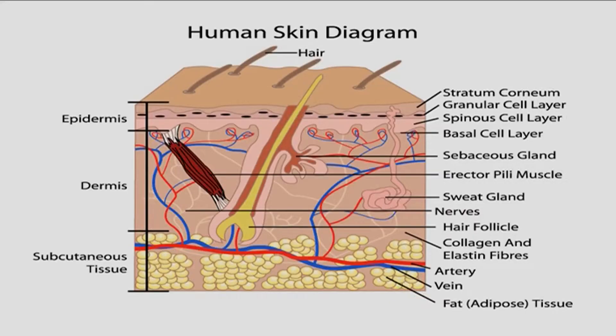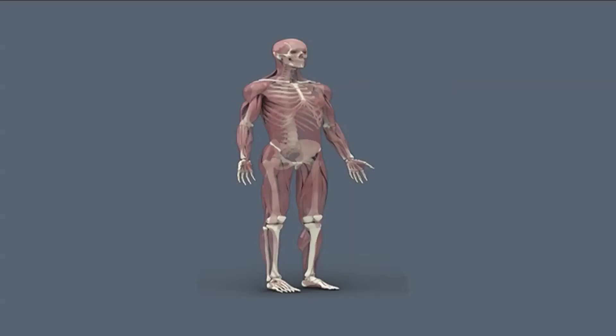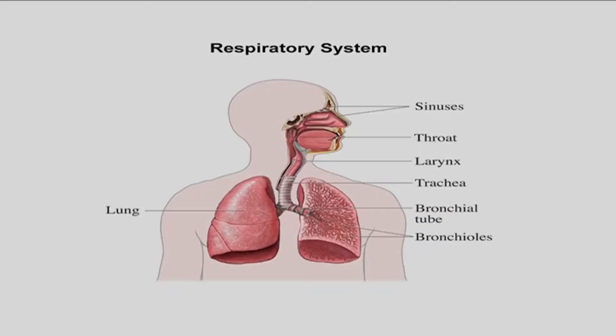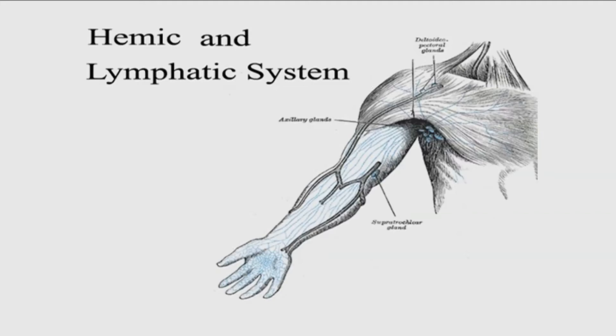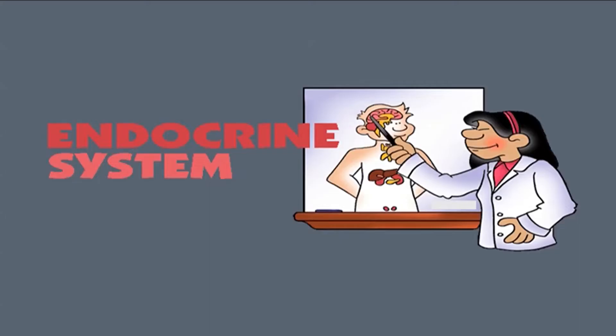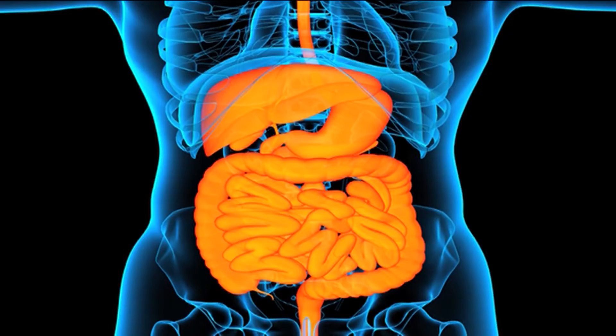There are different types of psychophysiological disorders, and they tend to affect different organ systems. It has been identified that there are nine different organ systems that are affected. They are the skin, the musculoskeletal system, the respiratory system, the cardiovascular system, the hemic and the lymphatic system, the endocrinal system, the gastrointestinal system, and the sense organs.